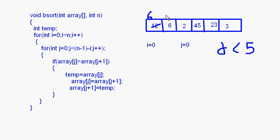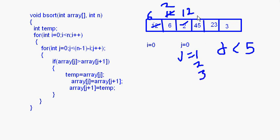So 12 comes here and 13 goes there. j becomes 1: array[1] and array[2] are compared — 13 and 6, 13 is greater, so this becomes 6 and this becomes 13. j becomes 2: 13 and 2 — swap, becomes 2 and 13. j becomes 3: 13 and 45 — no change. j becomes 4: 45 and 23 — swap, becomes 23 and 45. Then 45 and 3 — swap, this becomes 3 and this becomes 45. That is the first pass.